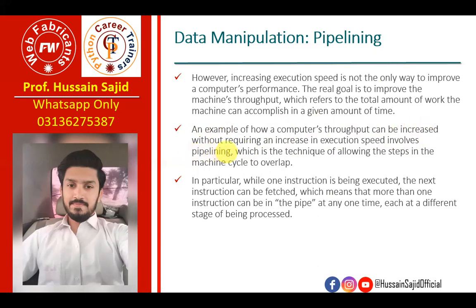An example of how computer throughput can be increased without requiring an increase in execution speed will involve pipelining. Pipelining is the technique allowing the steps in the machine cycle to overlap. While one instruction is being executed, the next instruction can be fetched, which means more than one instruction can be in the pipe at one time.